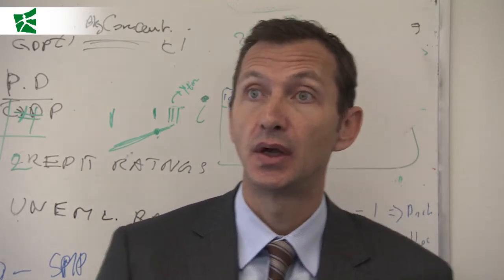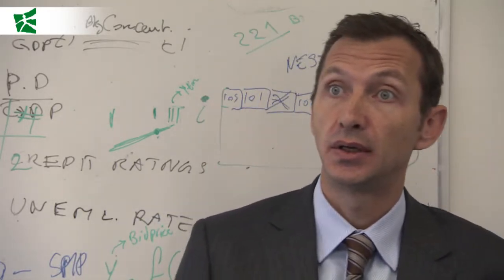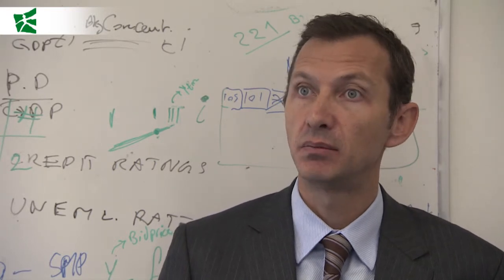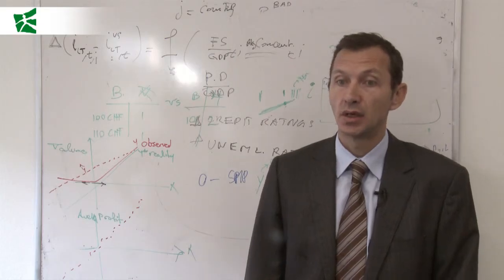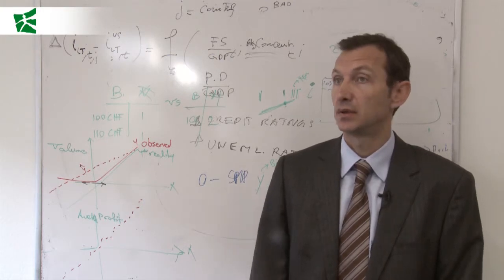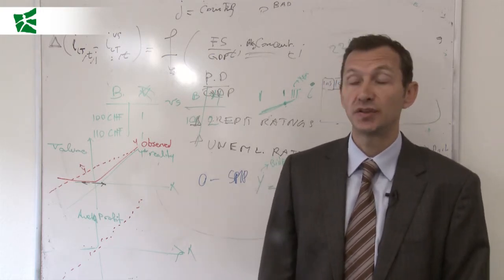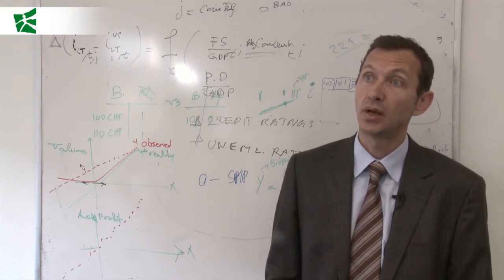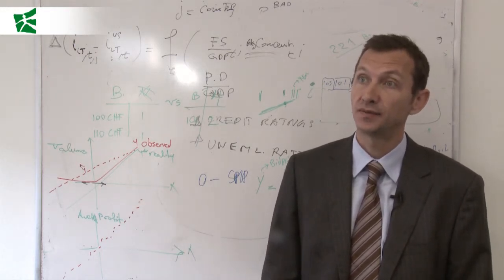If you think about Lehman Brothers, a few days before bankruptcy, they were sitting on, I think, 60 billion US dollars in cash. But after one week, this liquidity evaporated just because Lehman Brothers was relying on very short-term, uncollateralized funding.